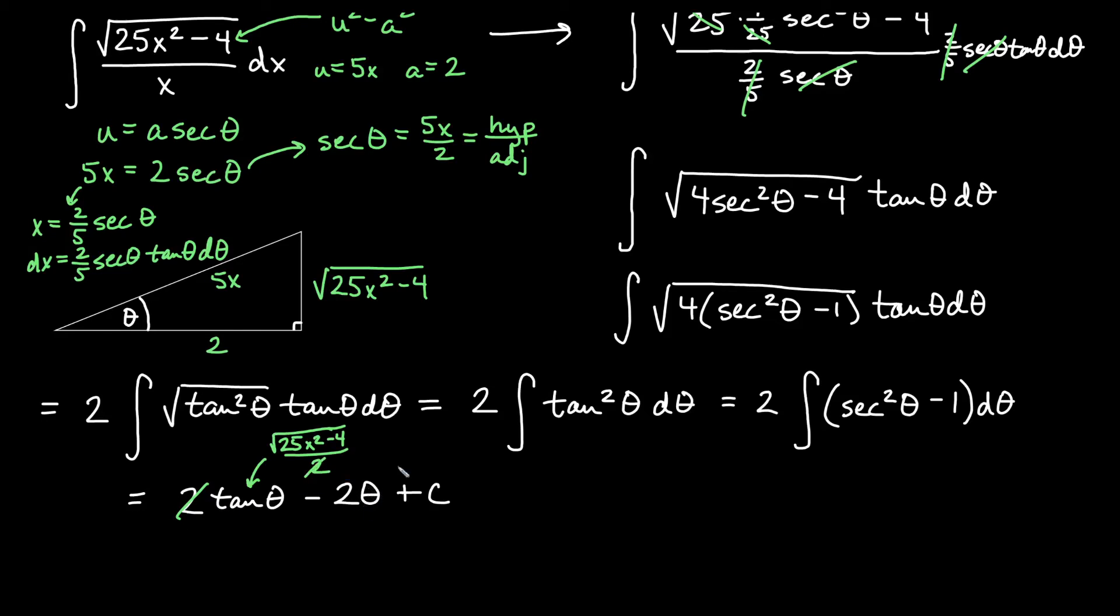And then if I want to know what theta is, I need to replace theta. I go back to my original statement here that secant theta is 5x over 2. That tells me that theta must be the inverse secant of 5x over 2. If that's true, so this is the inverse secant of 5x over 2.